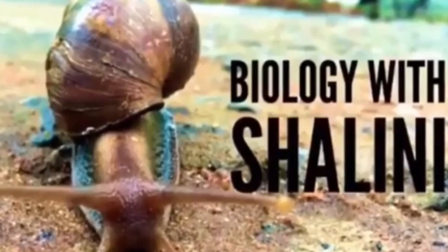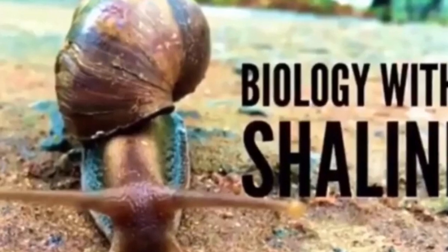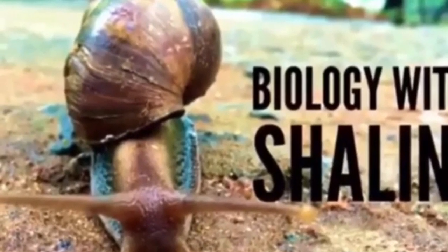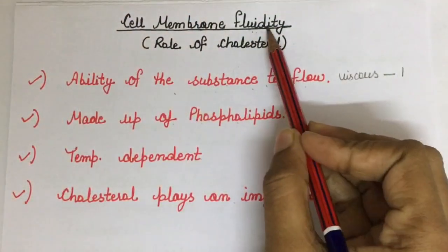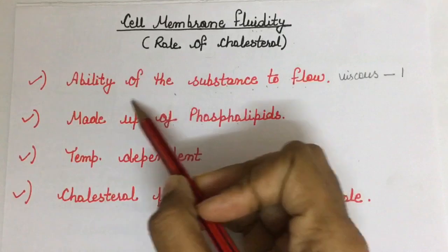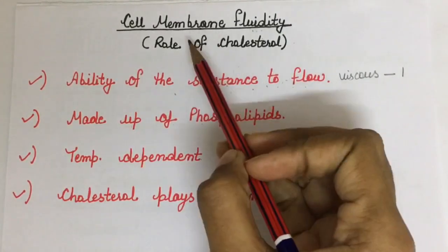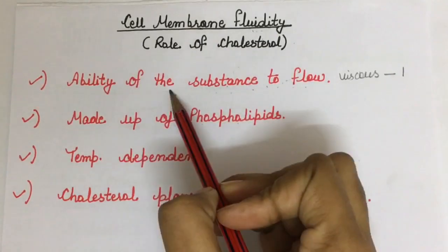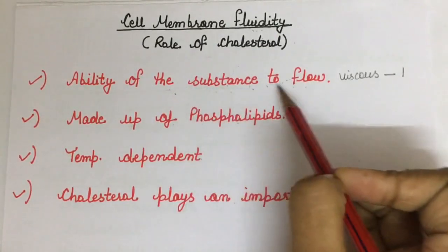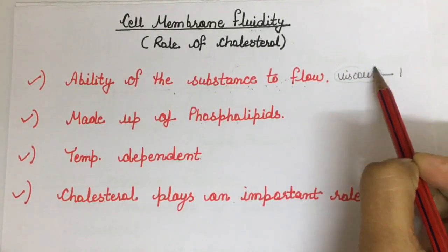Welcome to Biology with Shalini. In this tutorial we are going to talk about cell membrane fluidity and the role of cholesterol in maintaining fluidity. Fluidity is the ability of a substance to flow. If it is able to flow freely then it is fluid in nature, but if it has difficulty moving or flowing then it is viscous in nature.